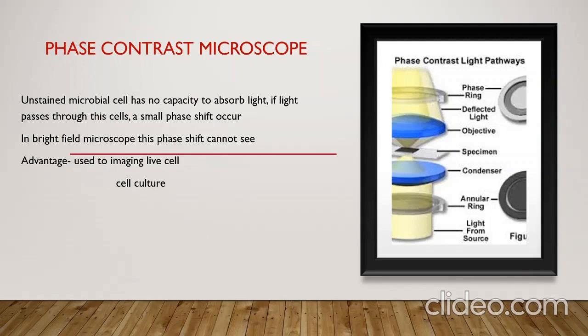In all other microscopes, we can see the image only through staining — without staining, we cannot see the image. Phase contrast microscope has the advantage that we can see unstained microbial cells. If light passes through the cell, a small phase shift occurs, which cannot be detected in bright field microscope. The advantage of phase contrast microscope is that it is used for imaging live cells and also in cell culture.